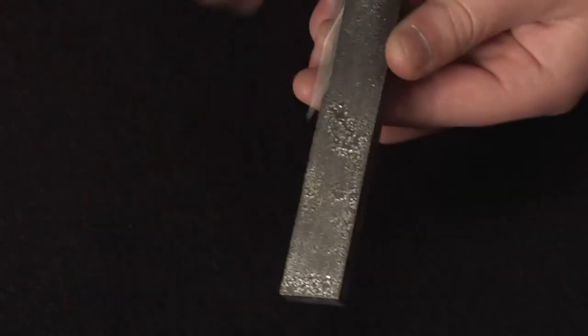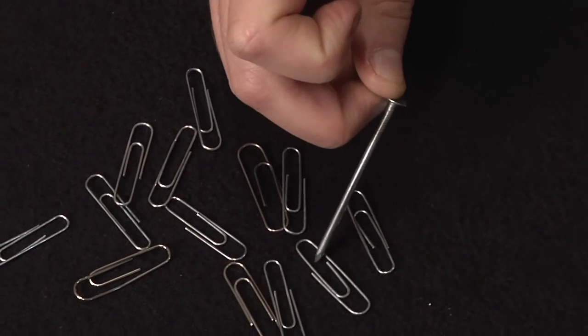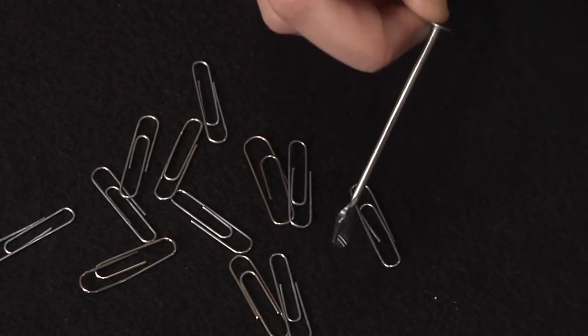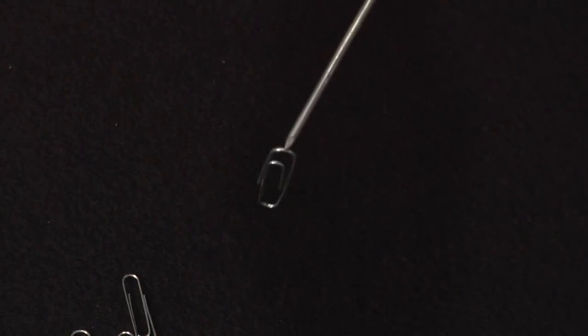Try this experiment. Rub the nail along the length of the magnet and try picking up the paper clip. The magnetic properties we've given the nail with the magnet will weaken after a while, but it shows that some materials can take on magnetic properties with a little help.